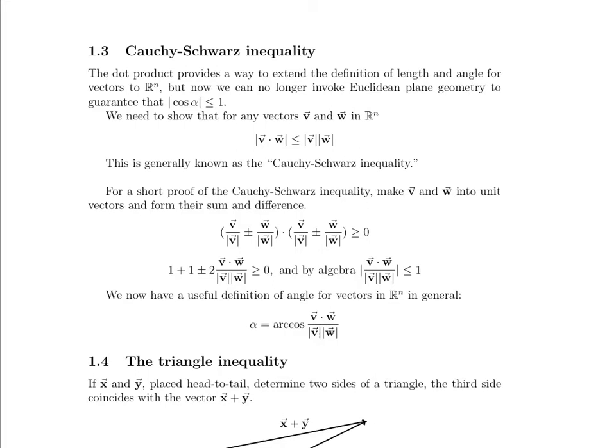Hi, this is Kate, and this is the second video for week two of Math 23. We've talked about the dot product and its properties. We've also discussed its definition, and now we're going to talk about some of the most well-known inequalities in mathematics. We'll be using these throughout our study of linear algebra, as well as in our work in analysis. So it's really important to understand them fully and where they come from. The dot product is central to their proof. Let's get started.